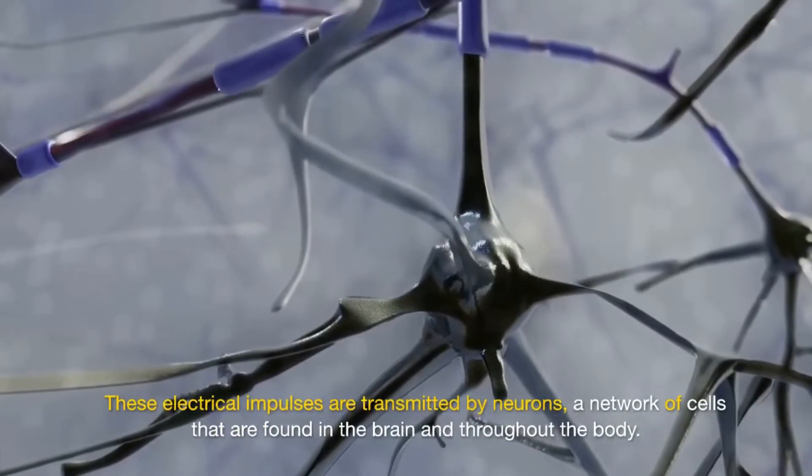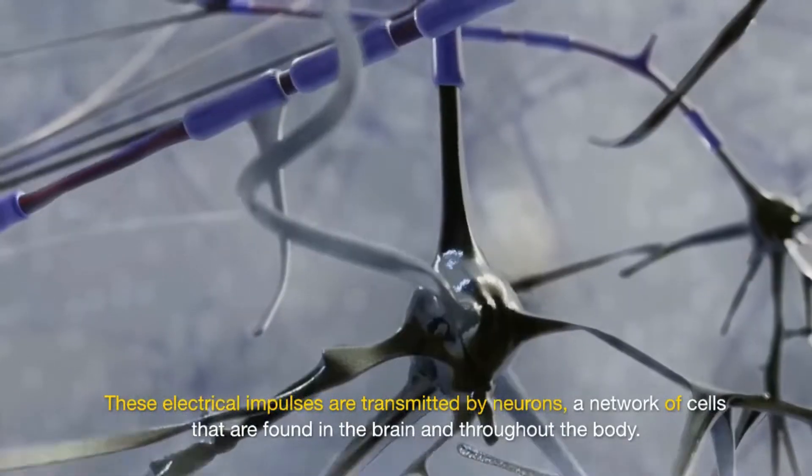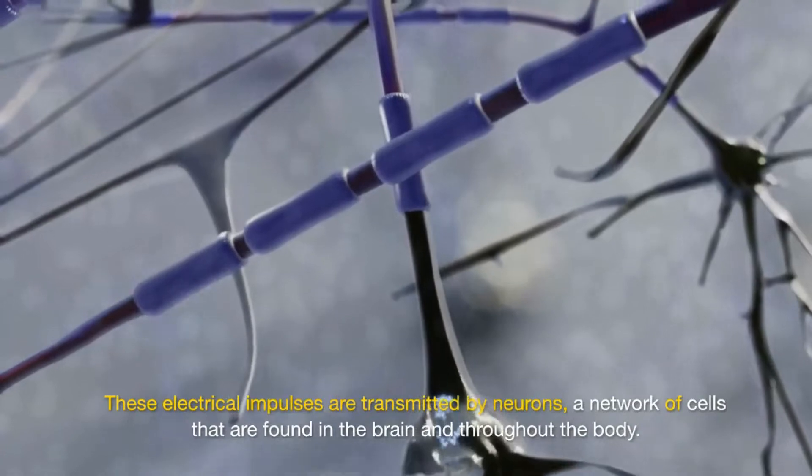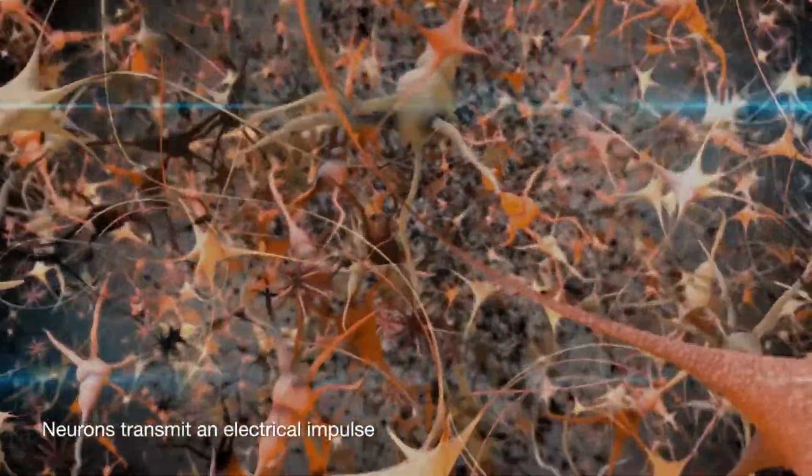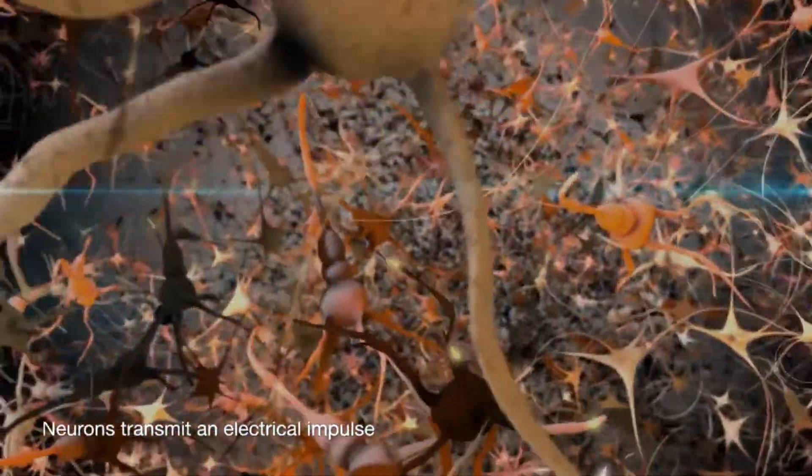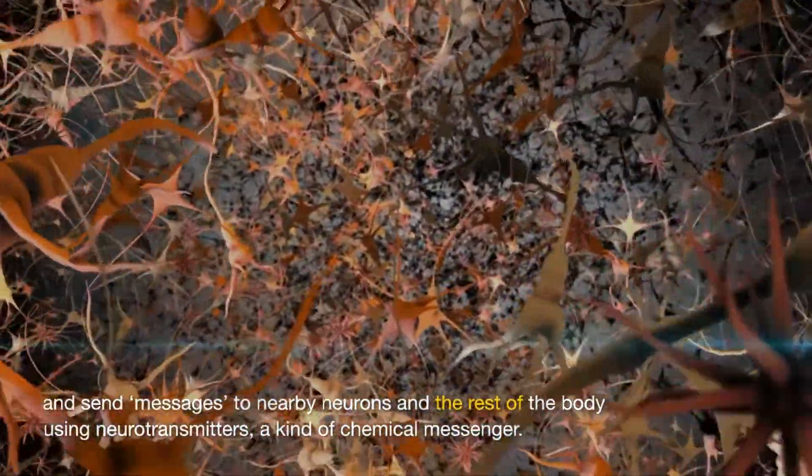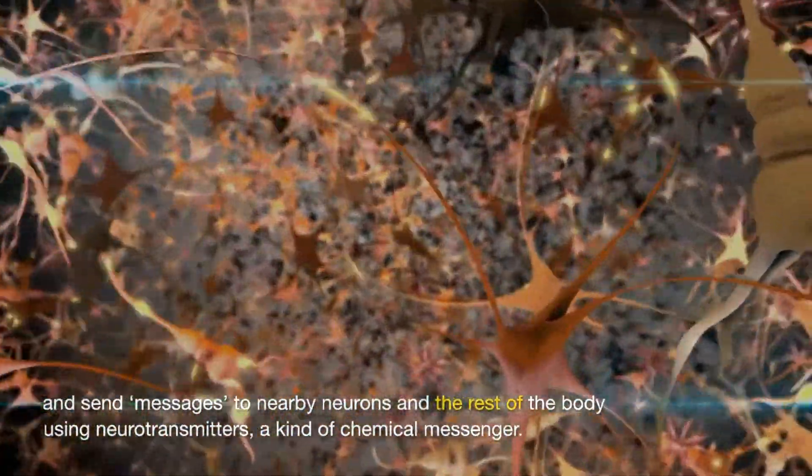These electrical impulses are transmitted by neurons, a network of cells that are found in the brain and throughout the body. Neurons transmit an electrical impulse and send messages to nearby neurons and the rest of the body using neurotransmitters, a kind of chemical messenger.